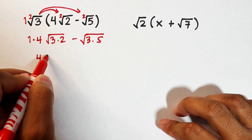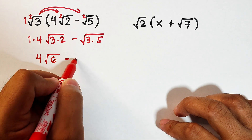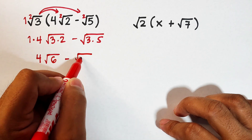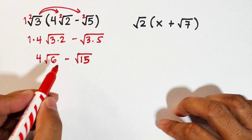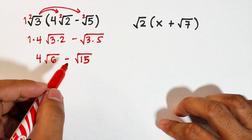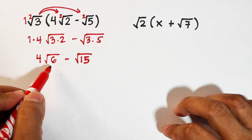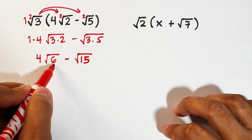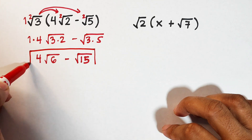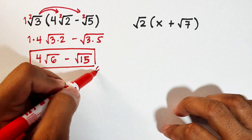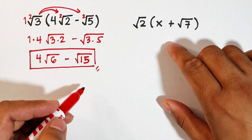So that gives us four times the square root of six, minus the square root of three times five, which is fifteen. We have a subtraction operation here, but we cannot subtract them because the radicands are different — six and fifteen are different. So we declare that our answer is simply four square root of six minus square root of fifteen.